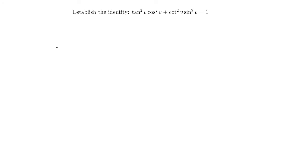Alright, so I have two more established identity problems. Let's start with tangent squared v times cosine squared v plus cotangent squared v times sine squared v equals 1. It looks very complicated, but it turns out it's not. So remember, when you're doing established identity problems, you always start by picking a side.